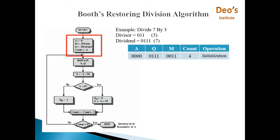First step: register A is initialized to 0, M is initialized to the divisor, Q is initialized to the dividend, and count is initialized to N. So Q is initialized to 0,1,1,1. M is 0,0,1,1. The number of bits of Q and M should be the same, so to make it 4-bit we have appended one more 0 — 0,1,1,1 that is 7 is our dividend. M is our divisor that is 0,0,1,1. A is 0,0,0,0. Q and M are 4 bits so A is also 4 bits. Count is equal to the number of bits of dividend and divisor, that is 4.